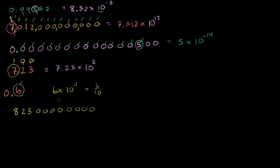One more — the number 823 followed by zeros. Let me throw some commas here to make it easier to look at. We take the largest value: the 8. So it's going to be 8.23 — we don't need to add the other stuff because everything else is zero. Times 10 to the... counting terms after the 8: 1 through 10. So it's 8.23 times 10 to the 10th.